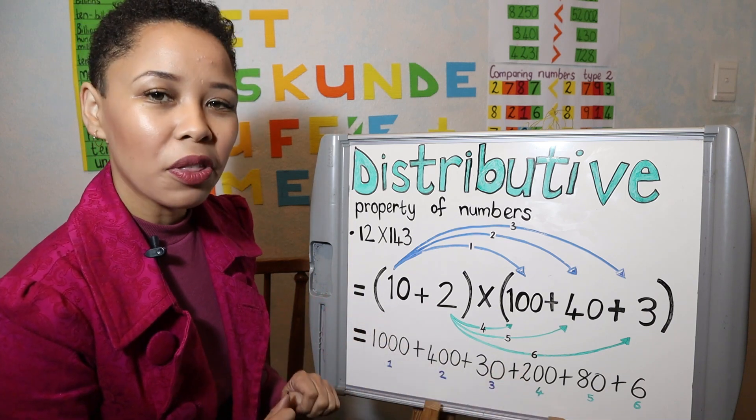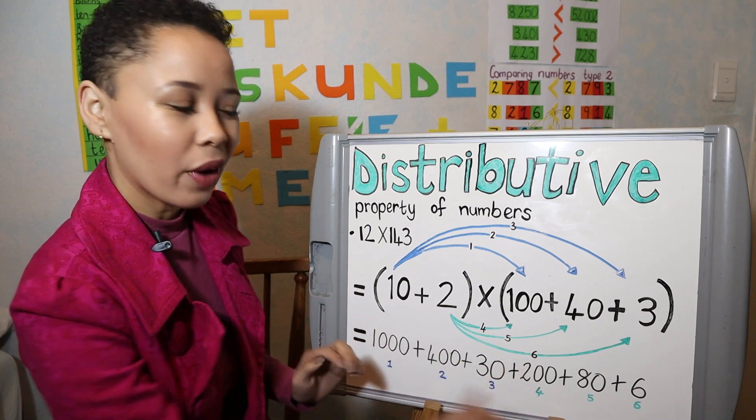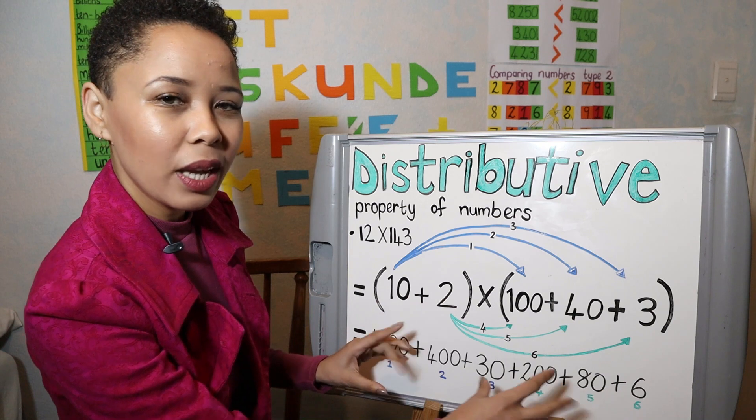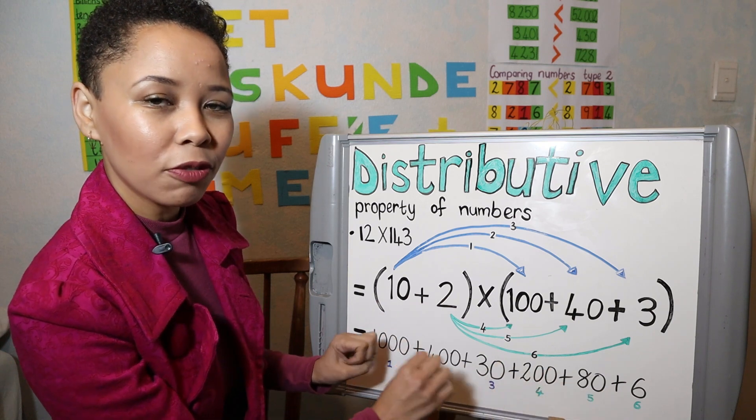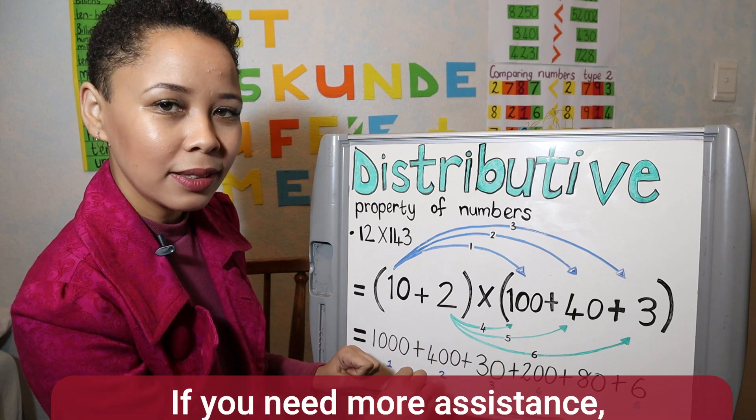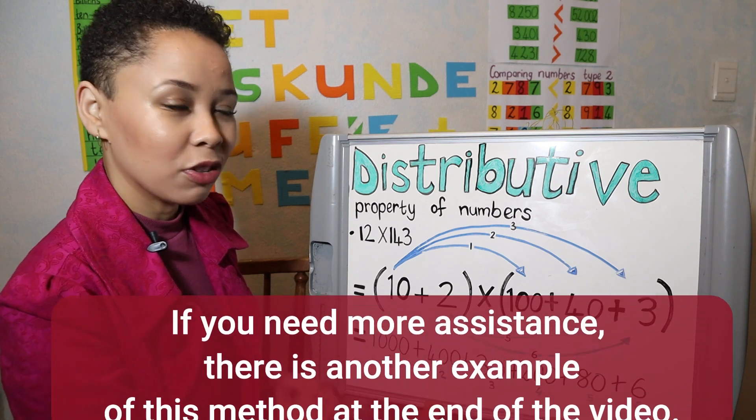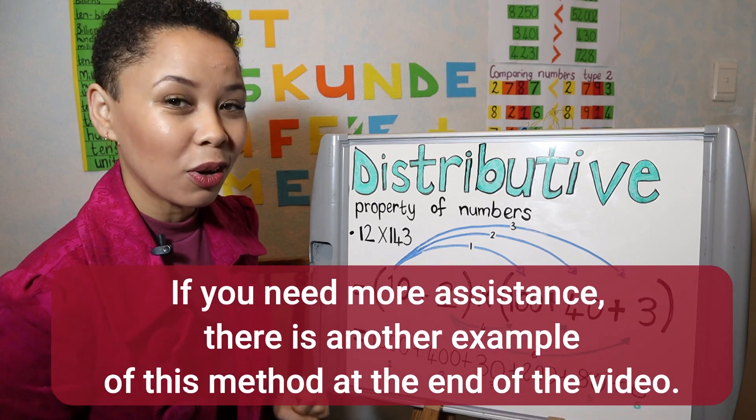What you do then is add all your numbers together after you've multiplied them, and write down your final answer.